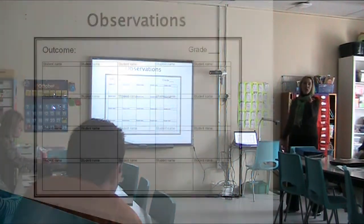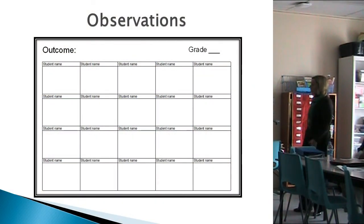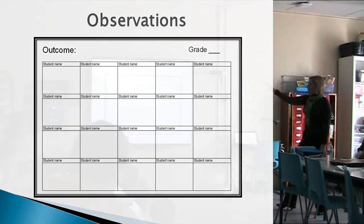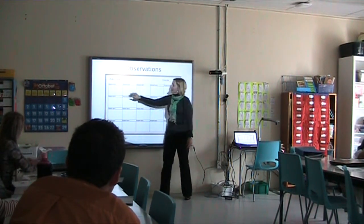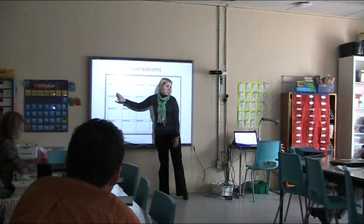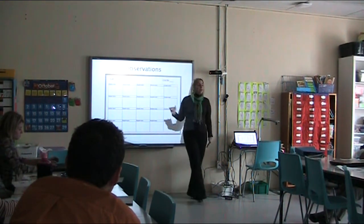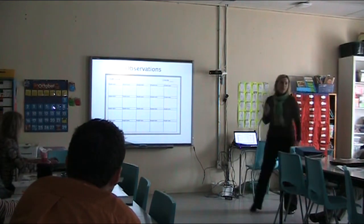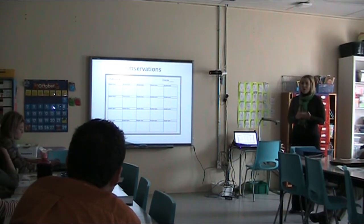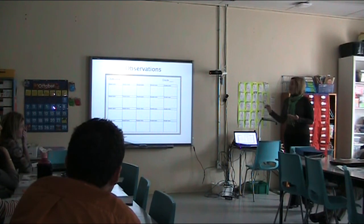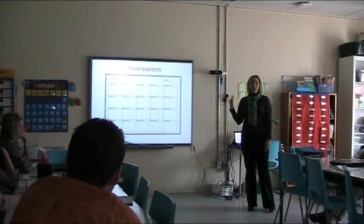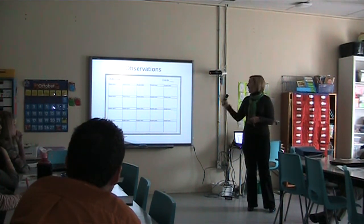This is a really neat observation sheet — you put whatever outcome you're working on, say SS1, then list your students' names. Use it for a whole week: if you notice something about Billy and his understanding, make a comment. Using it in a weekly format, you can see whether you've assessed each student informally. I'm guilty of always answering with the same hands — a sheet like this keeps you mindful of where every student is in their learning. It's just one sheet, not sticky notes you're going to lose.